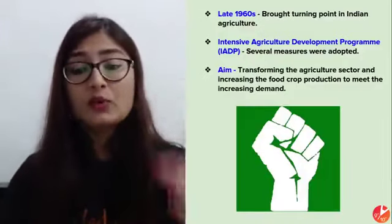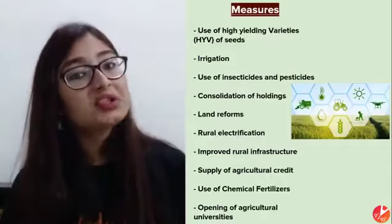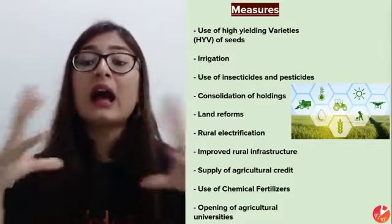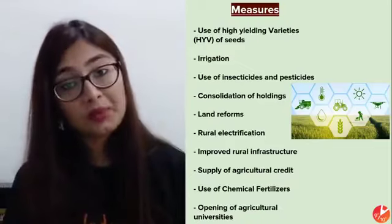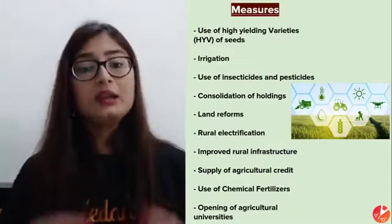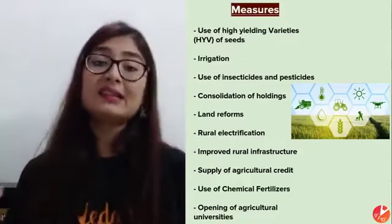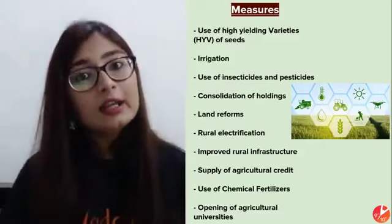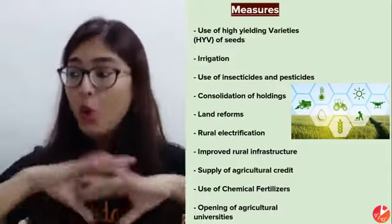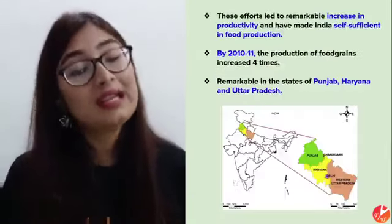Food crop production was supposed to meet the demand of the increasing population. For this, the government started many land reforms and programs, opened agricultural universities, introduced the use of chemical fertilizers, and began providing credit and loans to farmers so they could invest more. Capital investment increased, production increased, and fragmented holdings started getting consolidated.